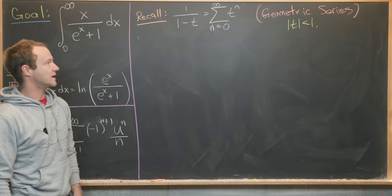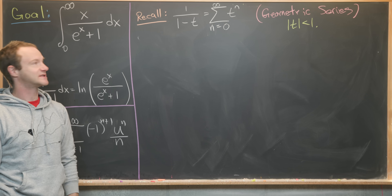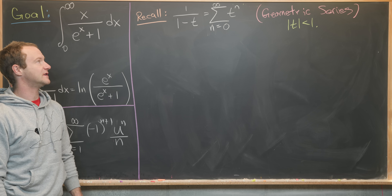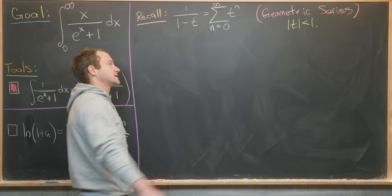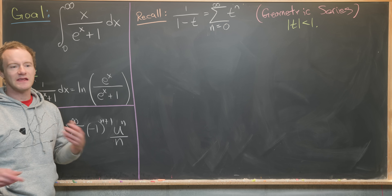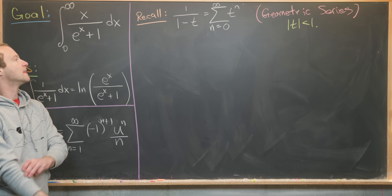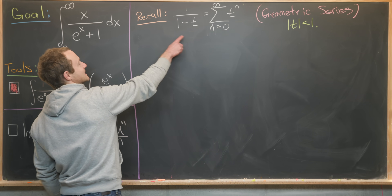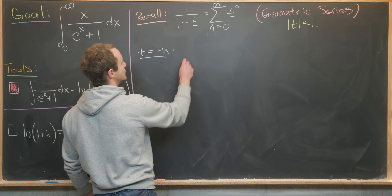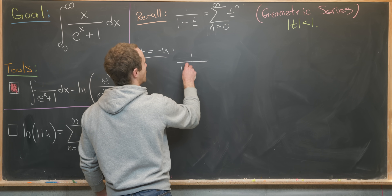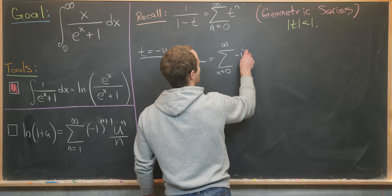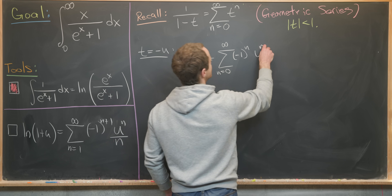We'll use as our starting point the standard geometric series formula: one over one minus t equals the sum as n goes from zero to infinity of t to the n, valid when the absolute value of t is less than one. Now we make the substitution t equals minus u, which gives us one over one plus u equals the sum as n goes from zero to infinity of minus one to the n times u to the n.